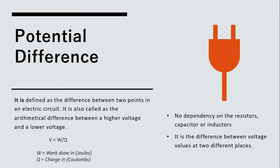Remember that well. Now, what is potential difference? There is a mild line of difference you need to understand. Potential difference is the difference between two points in an electric circuit. It is the arithmetical difference between the higher voltage and the lower voltage. Technically, the formula is V = W/Q, where W is work done in joules and Q is charge in coulombs. There is no dependency whatsoever with resistors, capacitors, or inductors — it is simply the difference in voltage between two different places.